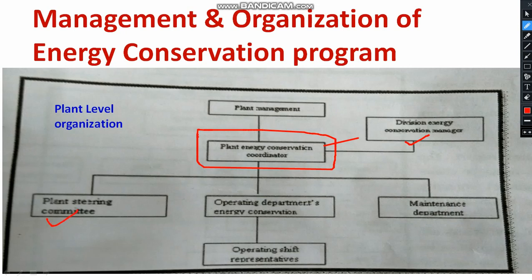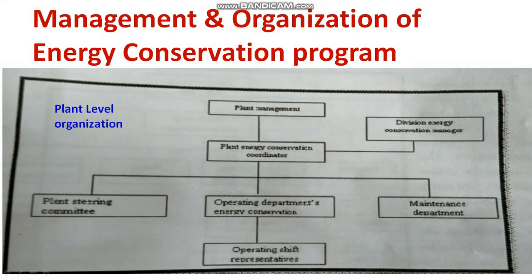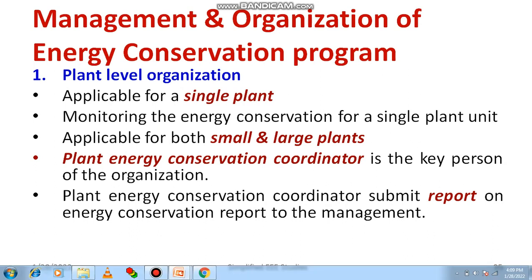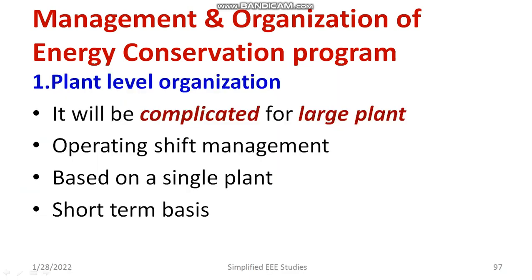You can see there is a plant steering committee, operating departments for energy conservation, and a maintenance department. Under the operating department there are operating shift representatives. The plant energy conservation coordinator interacts with both lower and upper levels, playing a very important role in plant level organization. The plant energy conservation coordinator submits the report on energy conservation to top management.